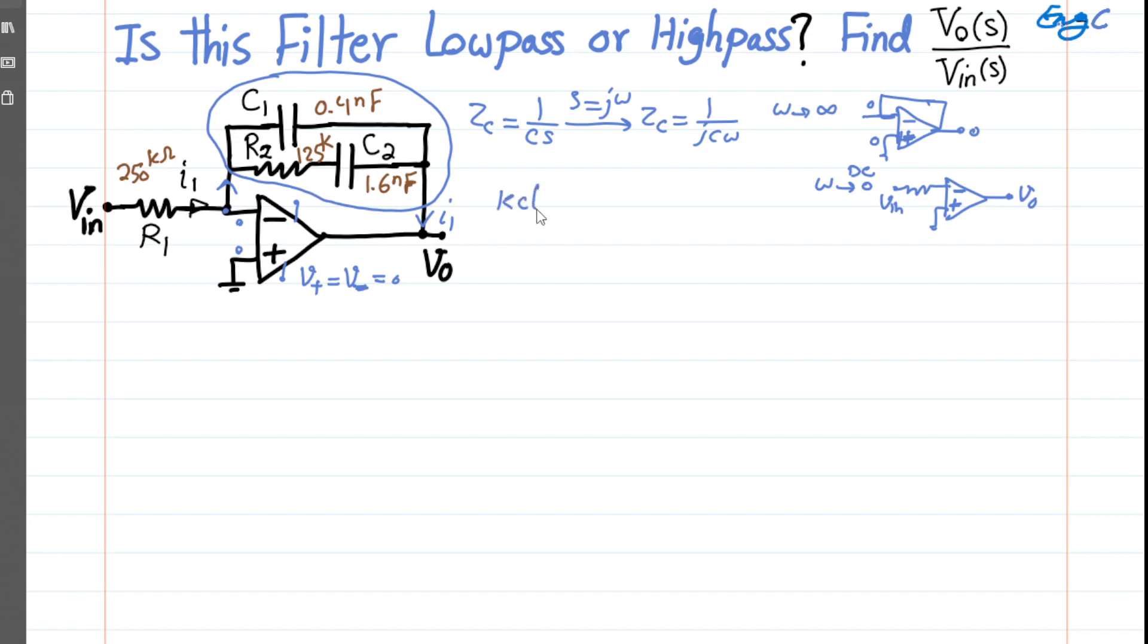So KCL at the negative input terminal of the op amp. I can write that I1 through R1 is equal to the current through all the total feedback impedance. So that effectively translates to (V_in - 0) / R1, that's this current, equal to (0 - V_out).